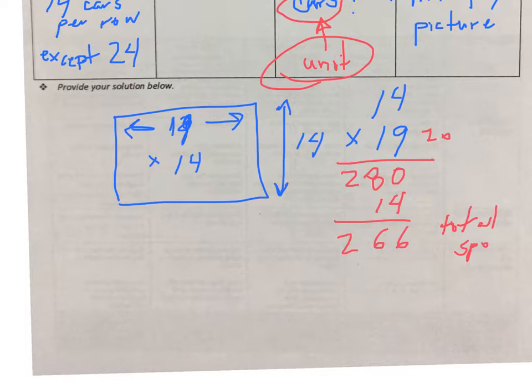Now here's the problem, though. I'm not done. I have to minus the 24 empty spots and I'm going to get 242. Now I'm not done.